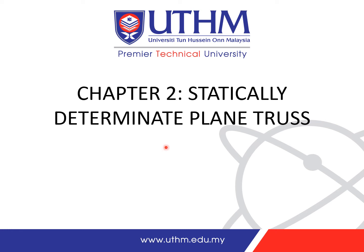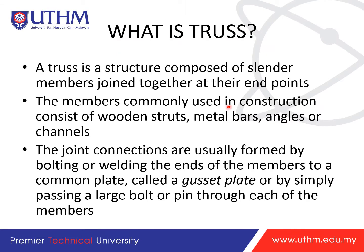Today I will explain Chapter 2: Statically Determined Plane Truss. A truss is a structure composed of slender members joined together at their endpoints. The members commonly used in construction consist of wooden struts, metal bars, angles, or channels. Joint connections are usually formed by bolting or welding the ends of the members to a common plate called a gusset plate.